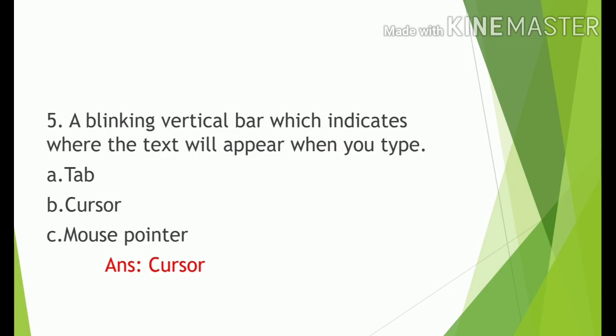Number 5. A blinking vertical bar which indicates where the text will appear when you type. A. Tab. B. Cursor. C. Mouse Pointer. Answer: Cursor.